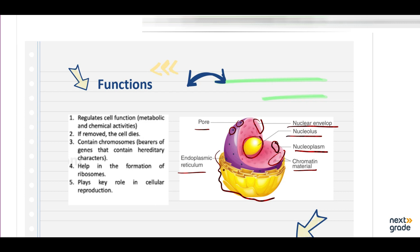It contains hereditary material in the form of chromosomes, which consists of whatever life activities they consist. Some functions which it performs: it regulates the cell function like the metabolic and chemical activities. If removed, the cell dies.